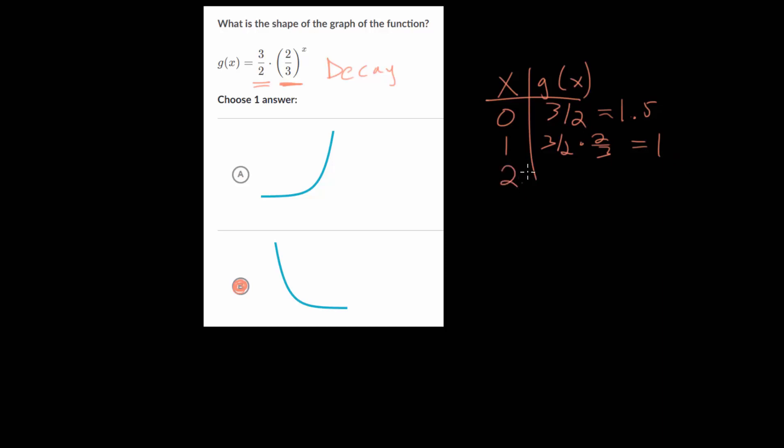And if we plug in two, we get 2 thirds squared, which is 4 ninths. So you get 3 halves times by 4 over 9. Multiplying straight across, you get 12 over 18, which is 2 thirds. So now we're less than one.